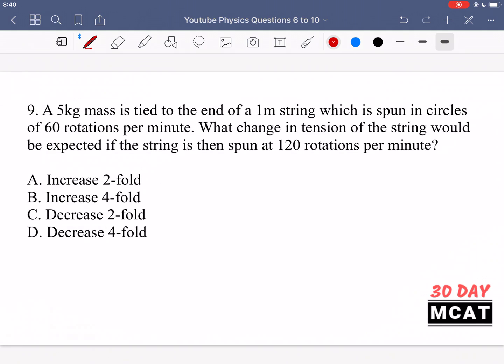In question 9, it says a 5 kg mass is tied to the end of a 1 m string which is spun in circles of 60 rotations per minute. What change in tension of the string would be expected if the string is then spun at 120 rotations per minute? So we have this mass, 5 kg, it's at the end of a 1 m string that is spinning in circles. And then it has 60 rotations per minute. We now double it to 120 rotations per minute. So we want to know the change in tension. That's what we're looking for.